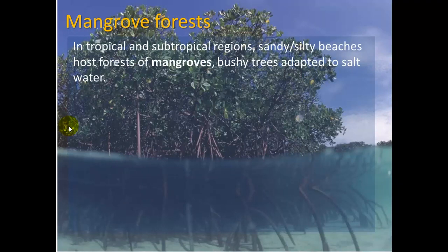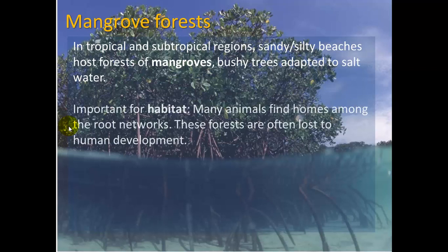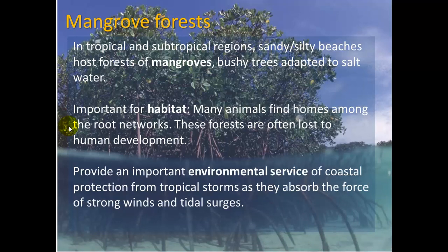Mangrove forests are found in tropical and subtropical regions on sandy and silty beaches. They host forests of bushy trees adapted to salt water, and many animals find homes among the root networks. These forests are often lost to human development. They provide coastal protection from tropical storms by absorbing the force of strong winds and tidal surges. It's said that Hurricane Katrina's intensity would have been drastically reduced if more mangrove forests had been left intact, since they break up wind, disrupt incoming water, and prevent erosion with their strong root systems.